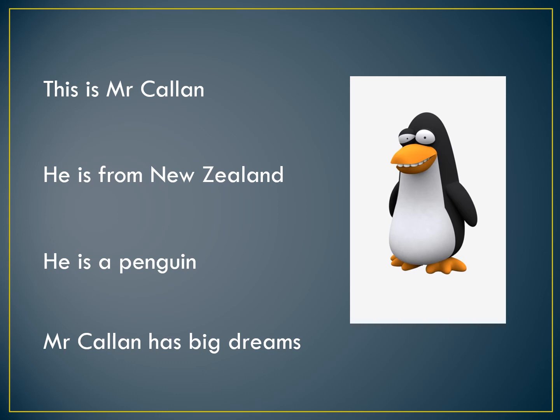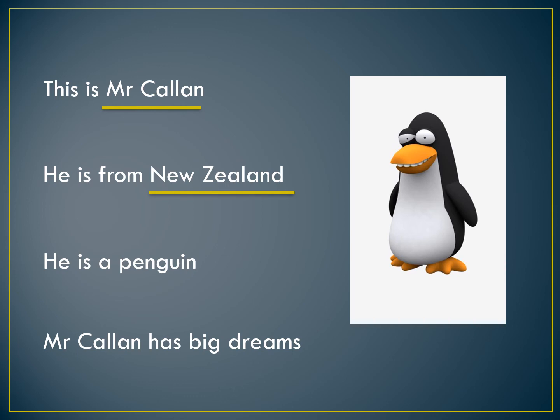First sentence: 'This is Mr. Callan.' Mr. Callan is a person or a living thing — yes. So you can see the underline in yellow, meaning it's a noun. Let's look at the second one: 'He is from New Zealand.' New Zealand is a country, which means it is a place, so it is a noun. 'He is a penguin.' Penguin is a living person or a thing, so penguin is a noun.